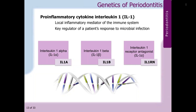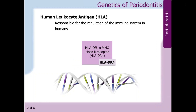IL-RN is a gene coding for interleukin-1 receptor antagonist. The human leukocyte antigen, HLA, also influences the expression of periodontal disease. HLA is responsible for the regulation of the immune system in humans. There is an association between HLA-DR4 and the rapid progression of the disease, found through a study where the gene was present in 30% of healthy patients and 80% of patients with progressive periodontitis. HLA-DR4 is a gene coding for a subunit of HLA-DR, an MHC class 2 receptor.